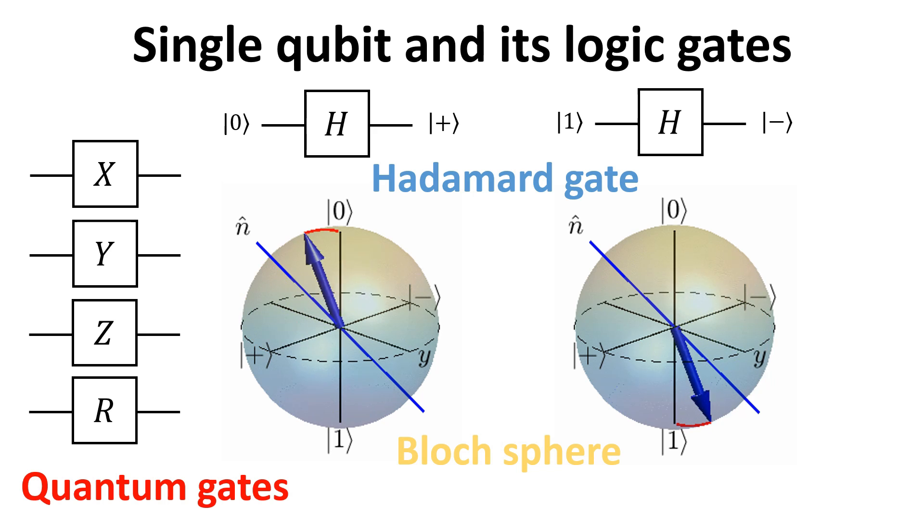We will discuss how qubit can be manipulated using quantum logic gates, focusing primarily on the single qubit gates in this video. This includes the Pauli X, Y and Z gates, the Hadamard gate, and the rotation gates. Let's get started.